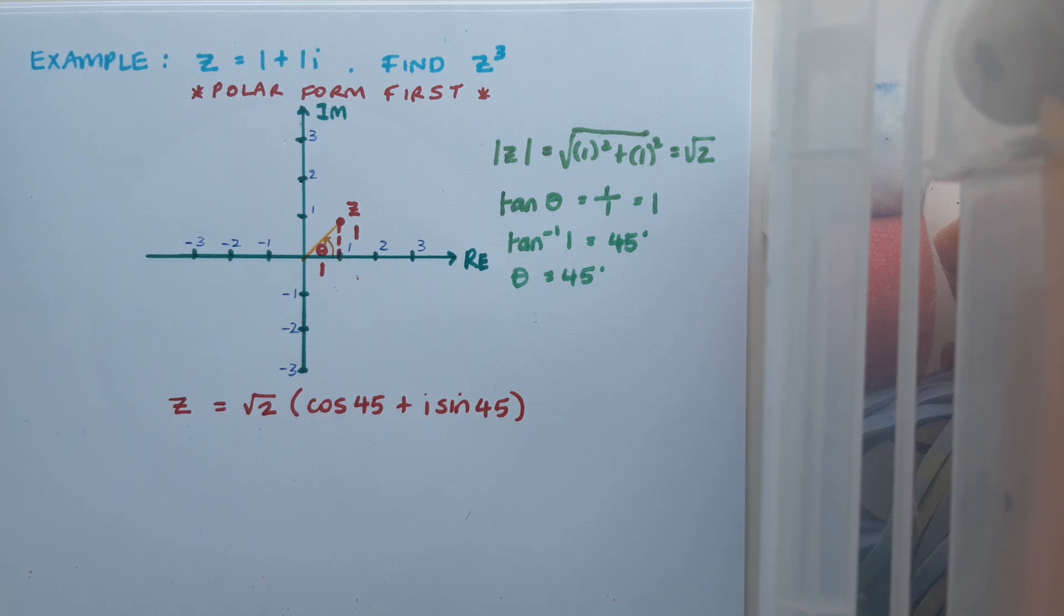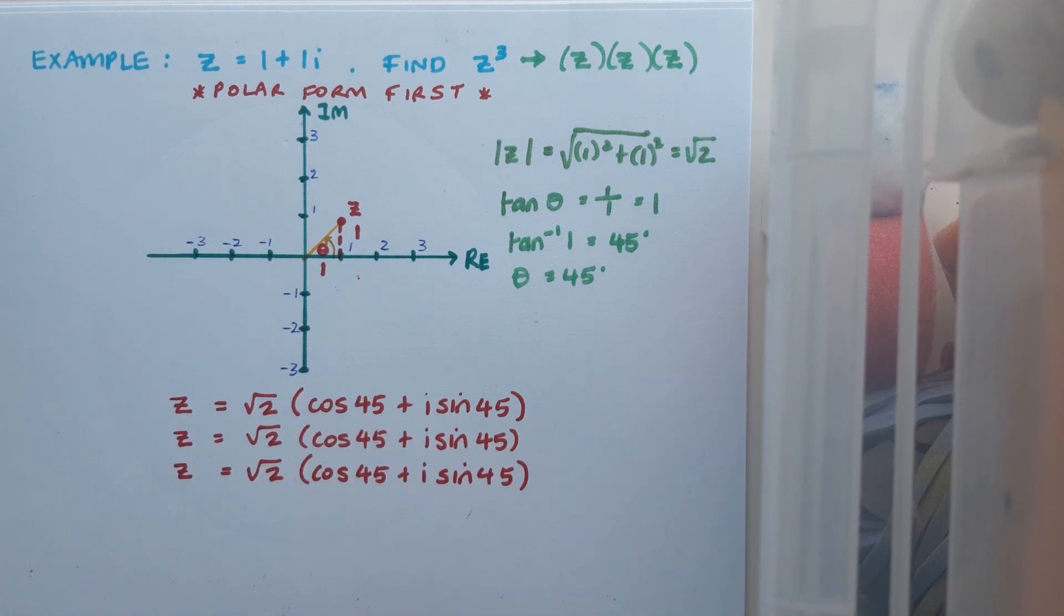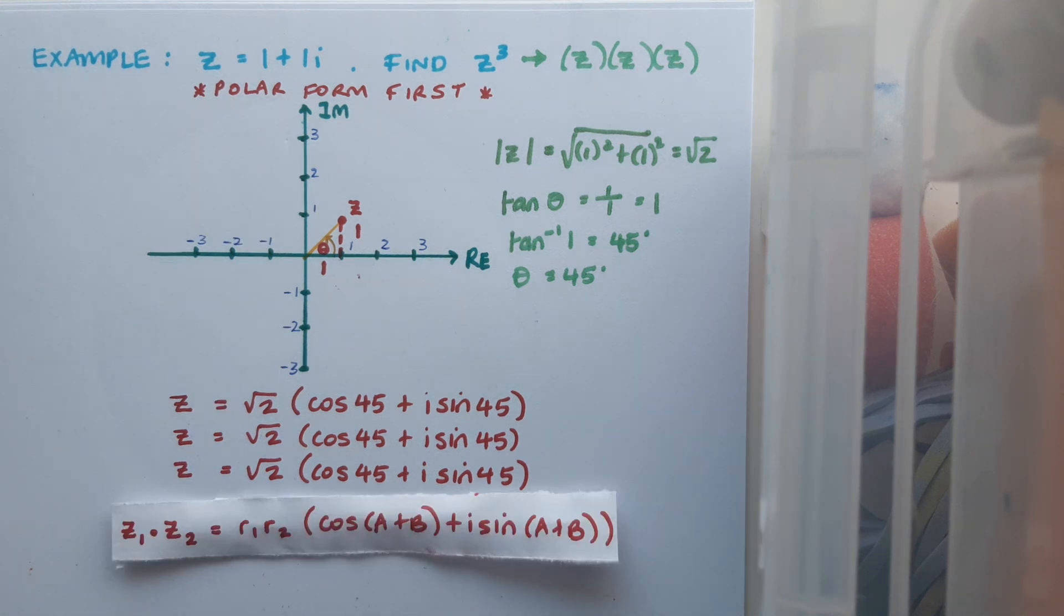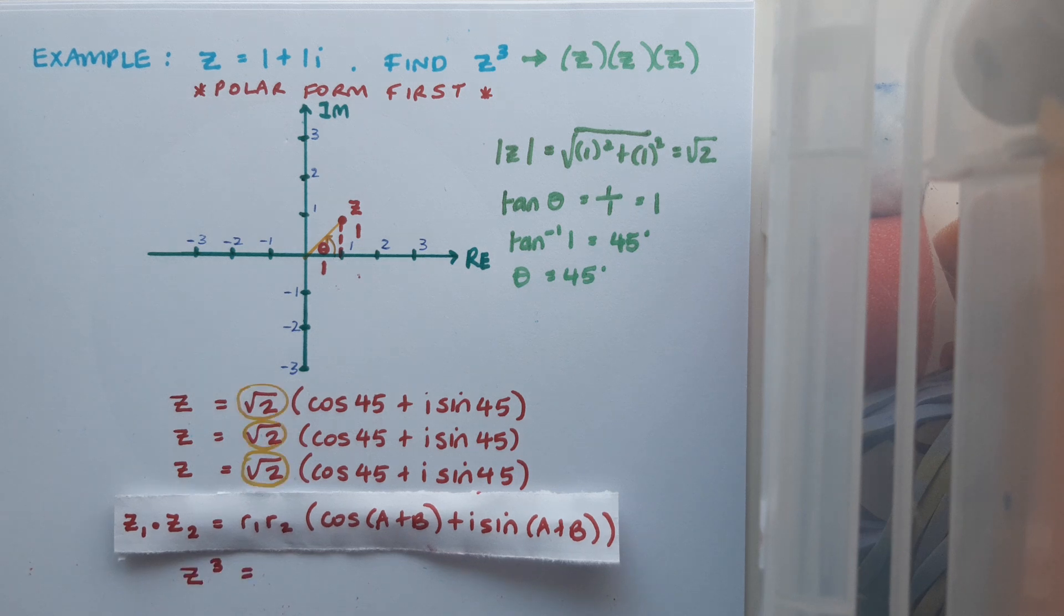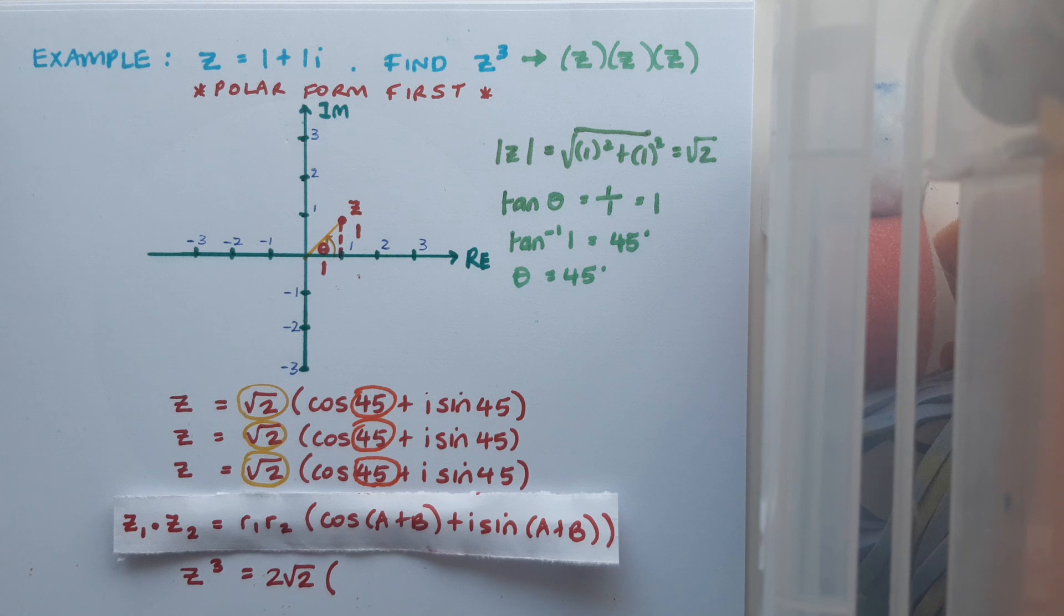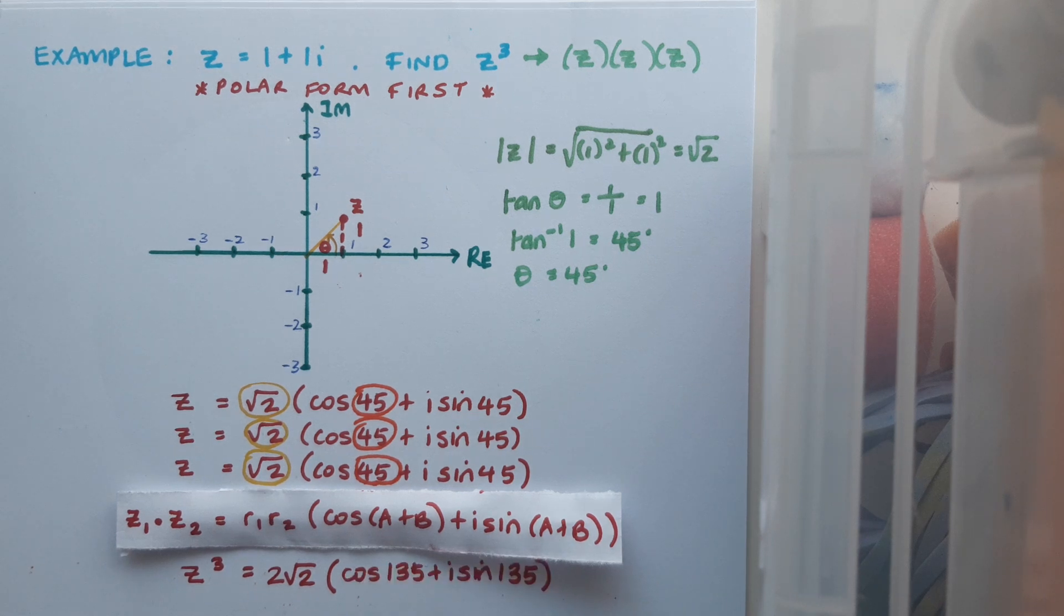Now I want to find z cubed. And of course, z cubed is just z by z by z. So I'm going to write my complex number z down three times. Now because I want to multiply, I'm going to think about my rule. If you recall, our rule for multiplication was to multiply the moduli. So root 2 by root 2 by root 2 is going to give me 2 root 2. And then I want to add up the angles. When I add these angles up, I'm going to get 135 degrees. So for just that little bit of effort at the start getting the complex number in polar form, the multiplication process is then vastly simplified.